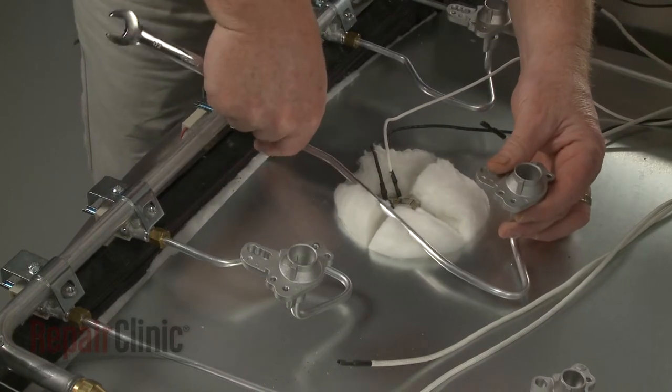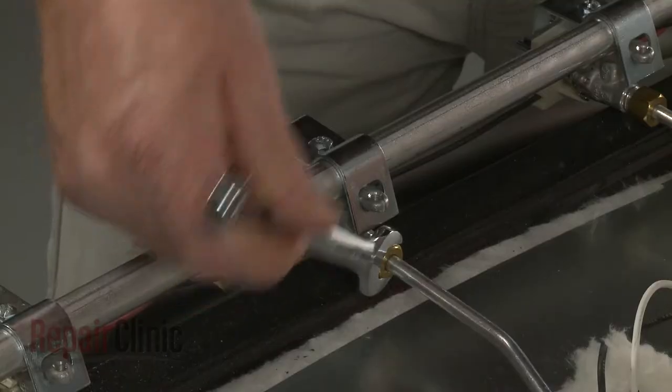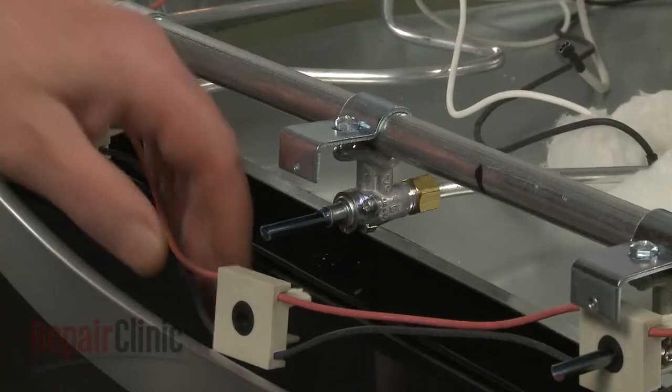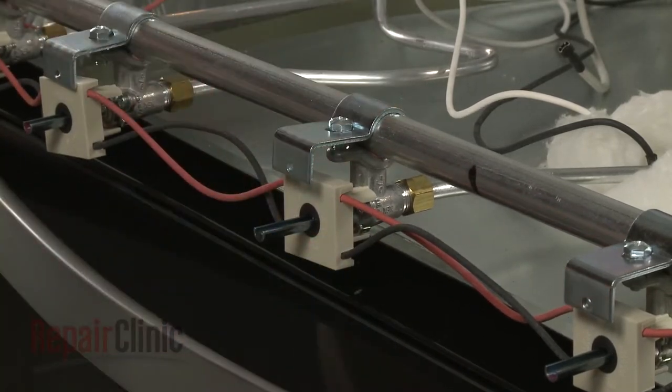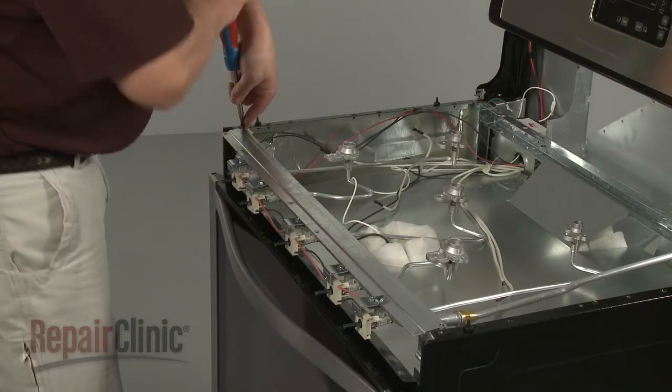Attach the gas tube to the valve, then thread and tighten the nut. Snap the spark switch onto the new valve. Reposition the support bracket and secure it with the screws.